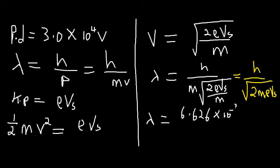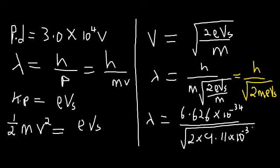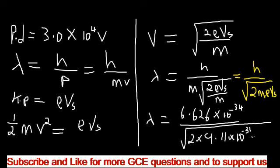Divided by the square root of 2 times the mass of the electron, which is 9.11 times 10 to the negative 31, times the PD which was given as 3.0 times 10 to the power 4.